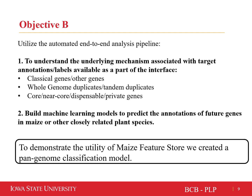The next objective of Maize Feature Store is to understand the underlying mechanisms associated with target annotations or labels available in the interface — such as properties common among classical genes, whole genome duplicated genes, tandem duplicates, core genes, near-core genes, dispensable genes, or private genes. We also aim to build several machine learning models to predict the annotation of future genes in Maize or other closely related plant species. To demonstrate the utility of Maize Feature Store, we critically discuss its application in pan-genome analysis using only a single reference genome.